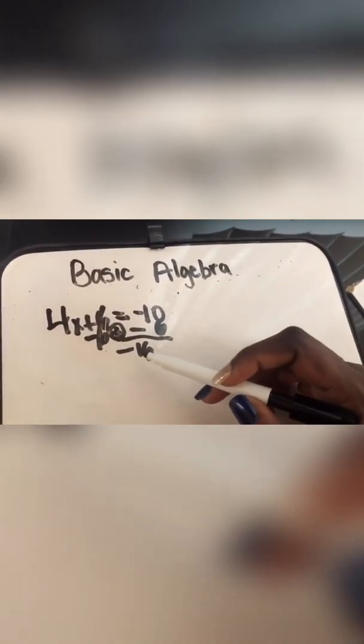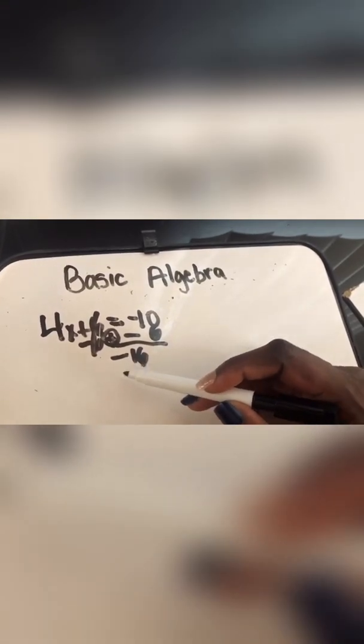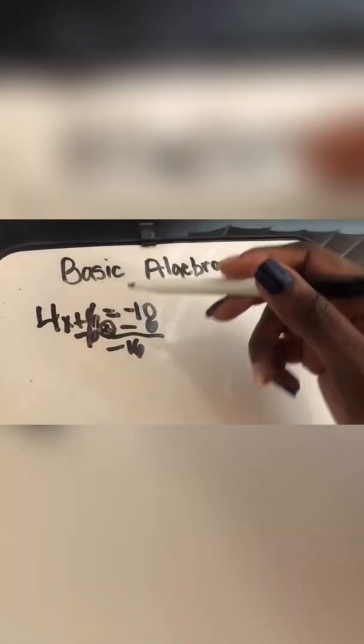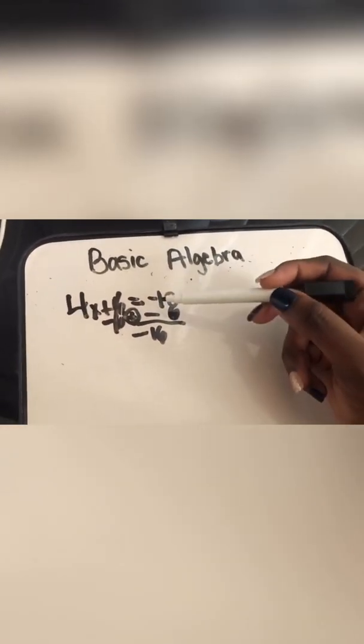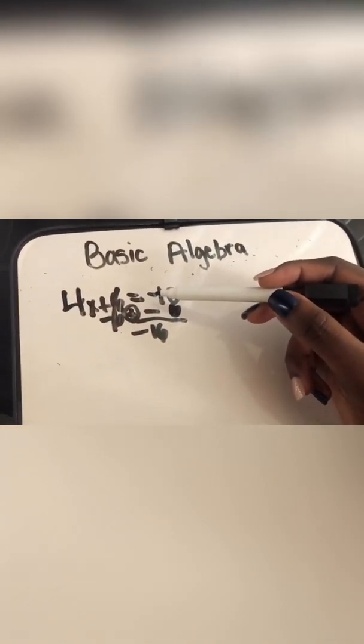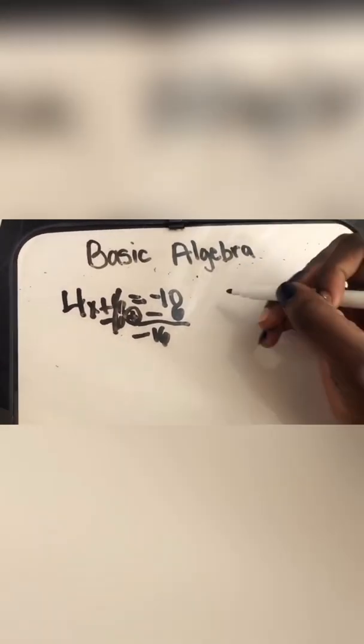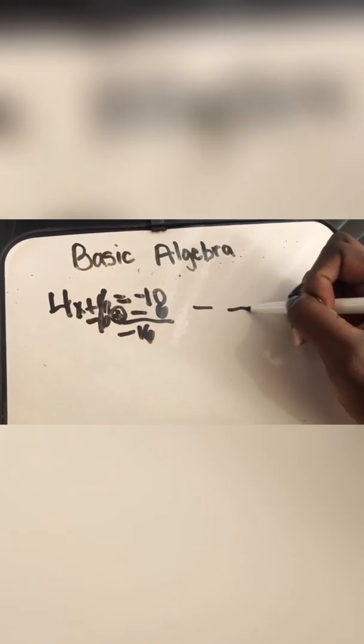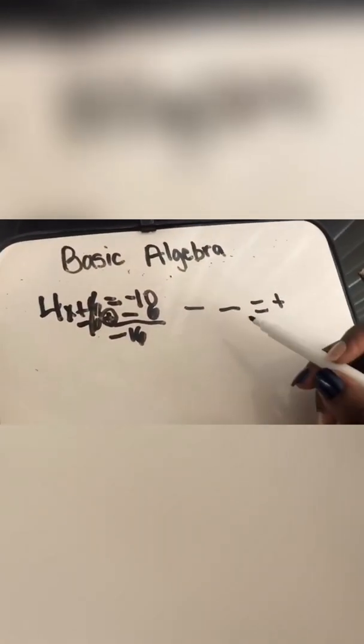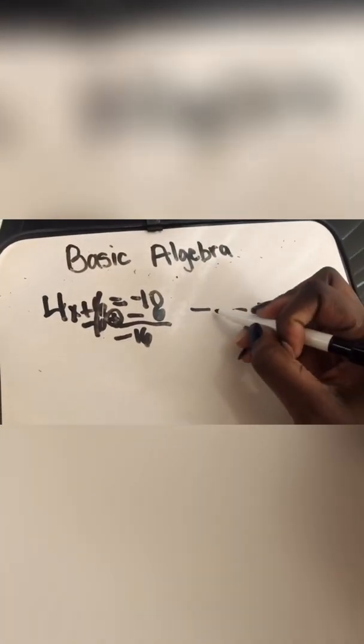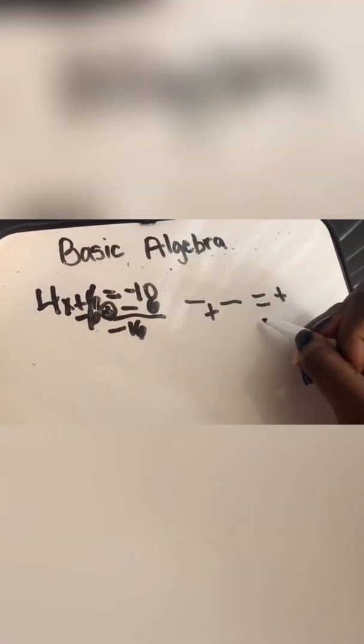Why is it a negative 16 you guys? It's a negative 16 because there's an addition sign right there. I know in your head you might say a negative and a negative and a negative together is a positive. Yes, that is true. It becomes a positive. But guess what? There's an addition sign right in the middle. So it's going to be still a negative.